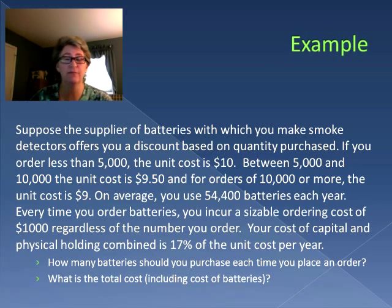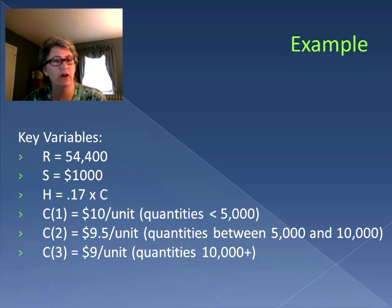Here are our key variables: annual demand of 54,400, setup of a thousand dollars, holding cost is 17% times the unit cost. Now we have three different unit costs: $10 per unit for quantities less than 5,000; $9.50 per unit between 5,000 and 10,000; and $9 per unit for quantities over 10,000.